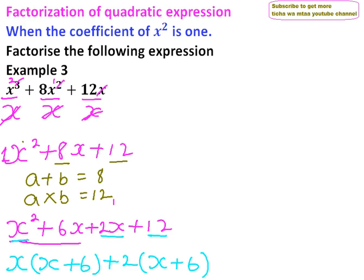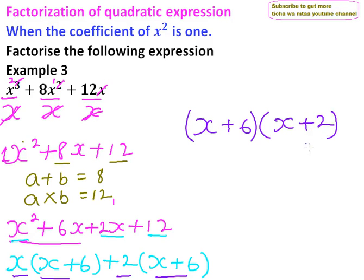The x plus 6 is common, so we factor it out. We have x plus 6 in brackets, and we're left with x plus 2 inside the second bracket. That is how we factorize that quadratic expression.